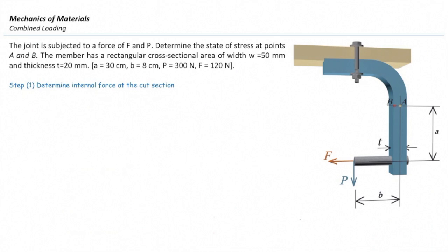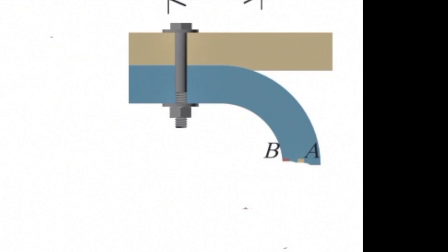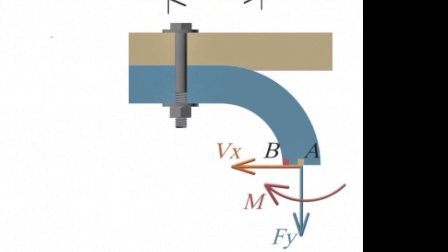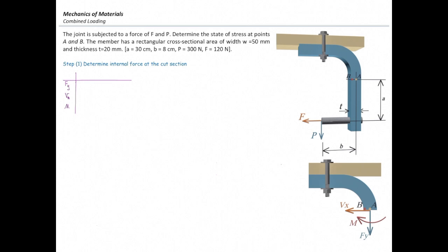The first step is determining the internal forces at the cut section. We need to cut the section passing through the point of interest, move all the forces to that cut section, and determine how much the forces are at that section. In general, in a two-dimensional plane, we have three forces: axial force, shear force, and bending moment. To determine the forces at the cut section more easily, I usually use a table.